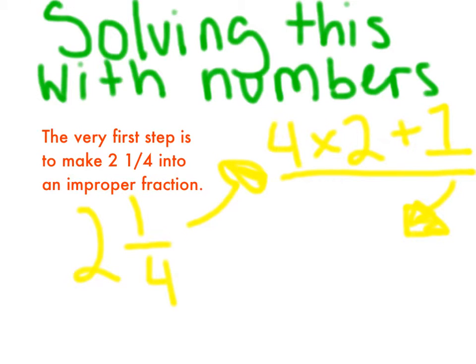So solving this problem with numbers. The very first step is to make 2 and 1 fourths into an improper fraction. So here's 2 and 1 fourths. And then what you have to do is 4 times 2 plus 1, and then you get 9 fourths.